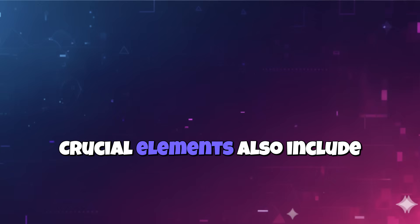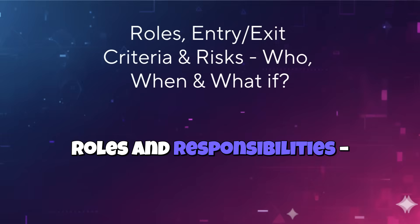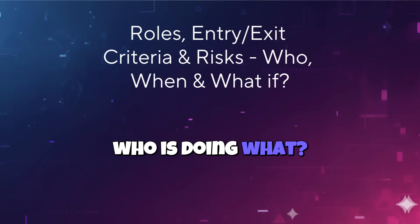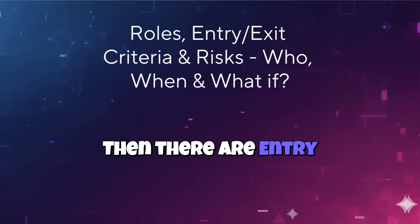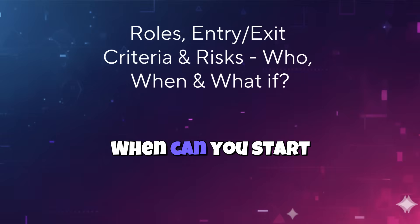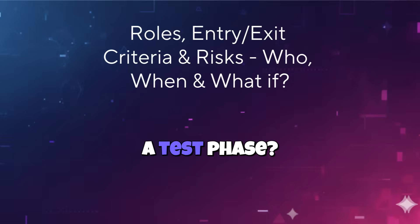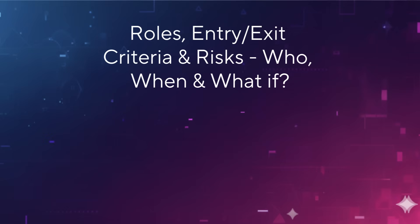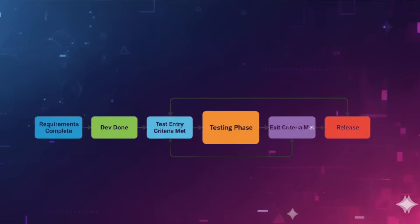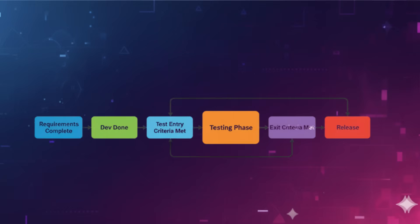Crucial elements also include roles and responsibilities — who is doing what. Then there are entry and exit criteria: when can you start a test phase and when can you finish it? Entry criteria for system testing might be all integration tests passed and all critical defects resolved. Exit criteria could be 95% test case pass rate and no critical open defects.